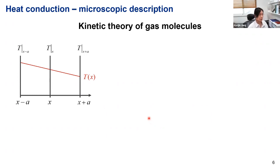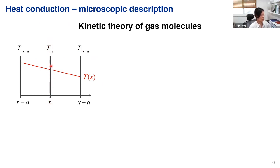Now let's introduce a temperature gradient to the system. For simplicity, I'll assume one-dimensional transport along the x-axis with a temperature profile along it. To derive an expression for Fourier's law, I'll derive an expression for heat flux at a given position. Suppose we have a hypothetical plane at constant x, and we count the heat flux across this plane. Molecules coming from the left contribute positive heat flux, and molecules from the right contribute negative heat flux — so the overall heat flux is the sum of the two.